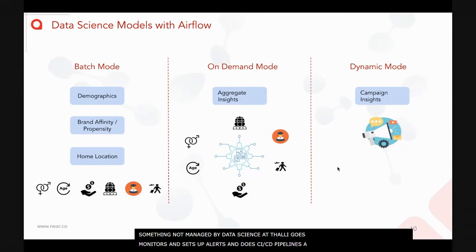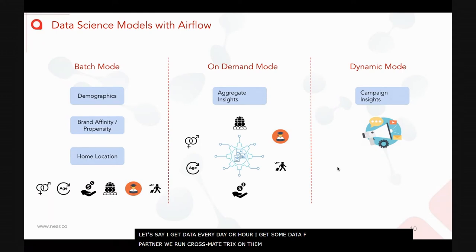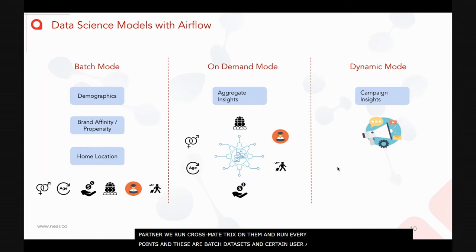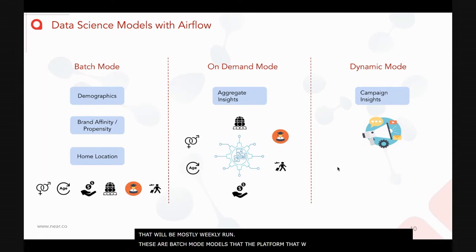When it comes to how we use Airflow for data science models, we operate in three modes. Batch mode covers things like hourly jobs ingesting data from ad exchanges or partners, running cross-identity matching, computing stay points, and daily POI assignment. User behavior models — gender, age group, home location, work location — run on a weekly cadence. All of these are batch mode models.